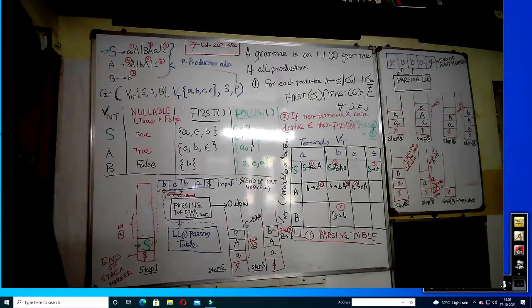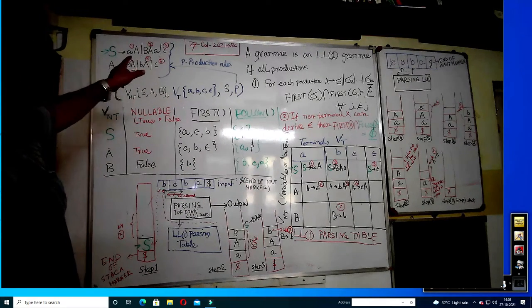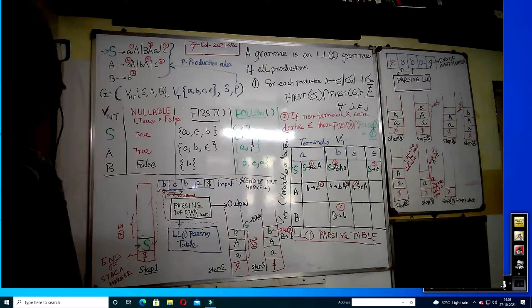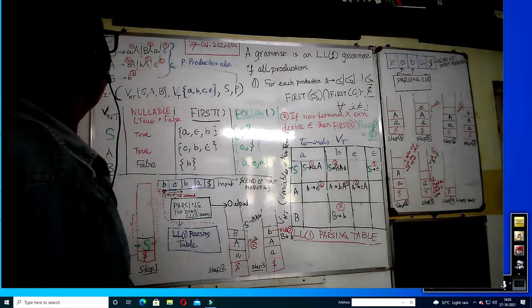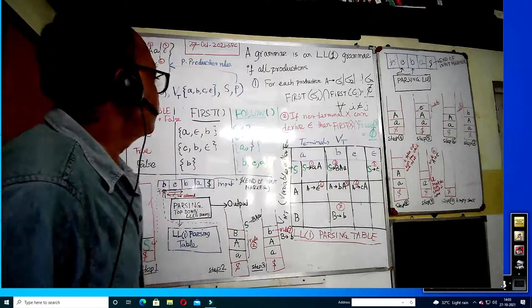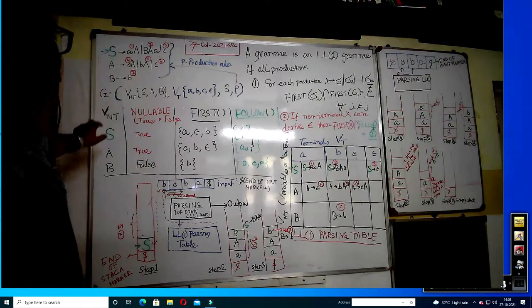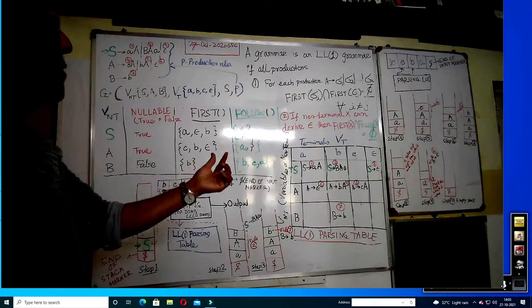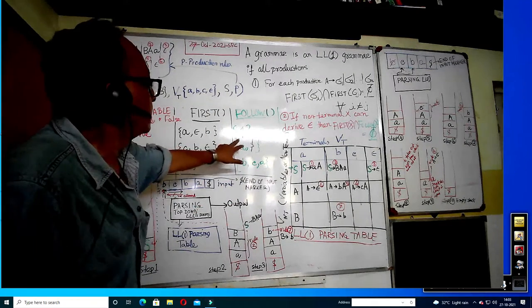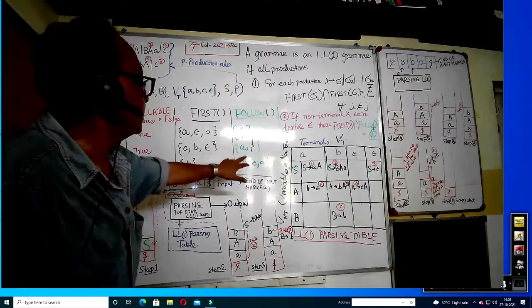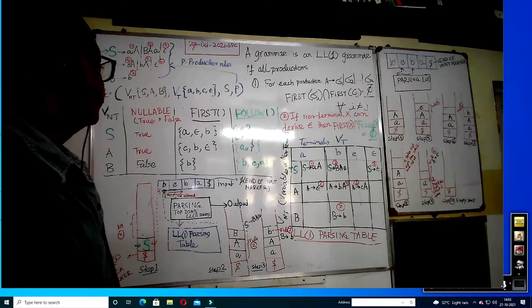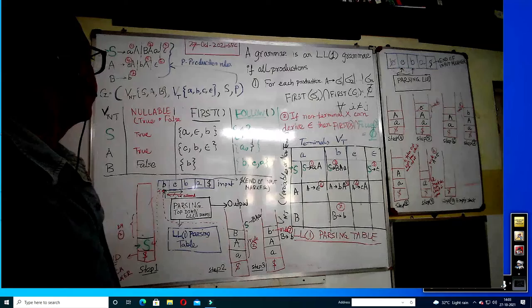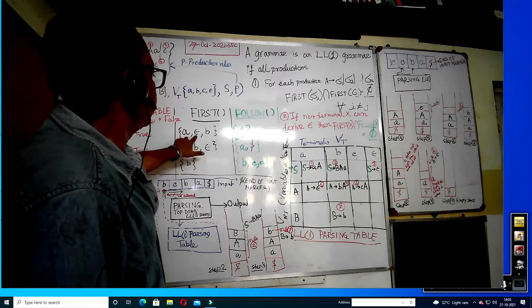For FOLLOW of B, from rule 2, since A can go to epsilon, the FOLLOW of A also comes into FOLLOW of B. So FOLLOW of B includes FIRST of A minus epsilon, plus FOLLOW of A if A is nullable. We check that FIRST and FOLLOW intersection is empty for nullable variables. For A and A which are nullable, there is no common terminal between FIRST and FOLLOW — so the intersection is empty. Capital B is not nullable, so we need not check it. This confirms the grammar is LL(1).